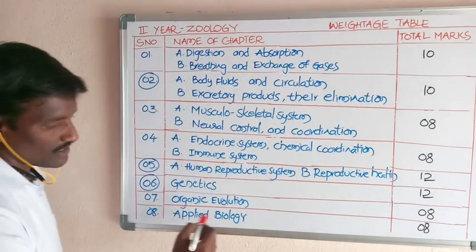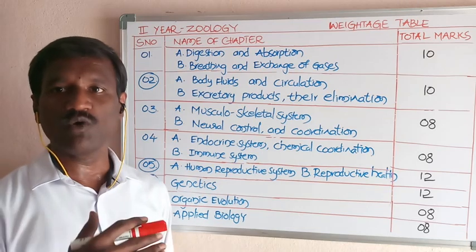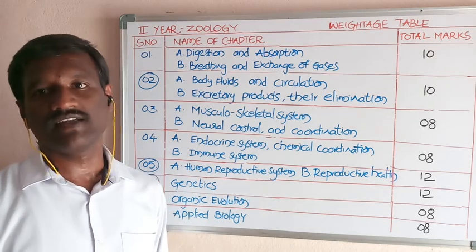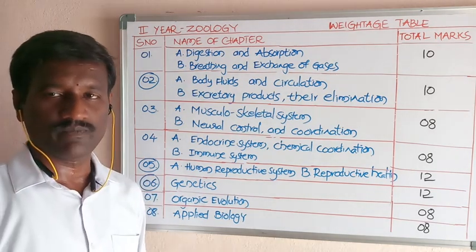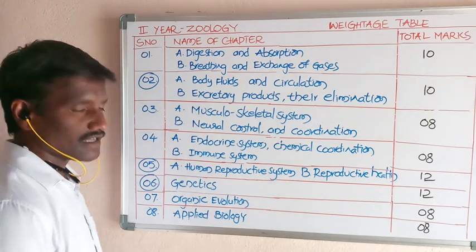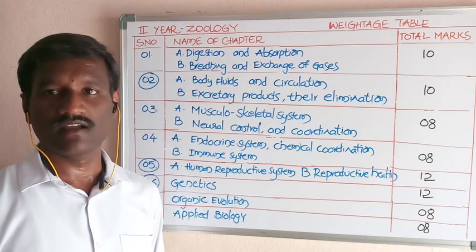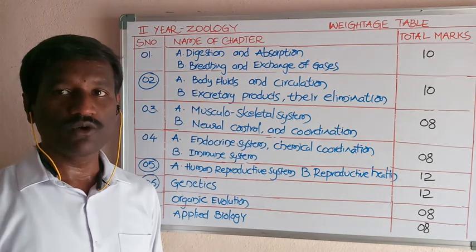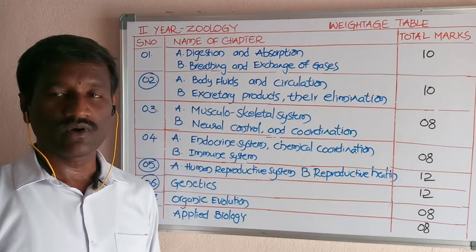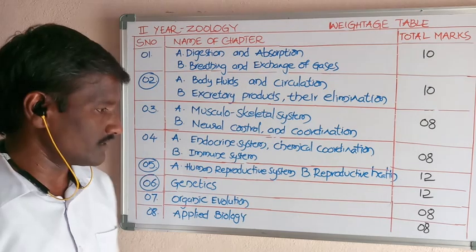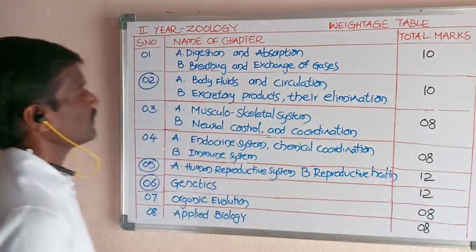The last chapter, chapter 8, is applied biology. Applied biology means the knowledge present in animal science or biology is applied to different real-world applications. Topics include cancer, sericulture, fisheries, and biomedical instruments, which are useful to diagnose and treat different types of disorders. The weightage of this last chapter is 9 marks.